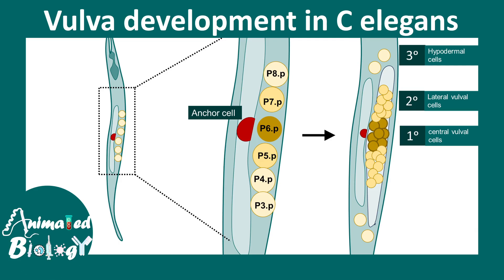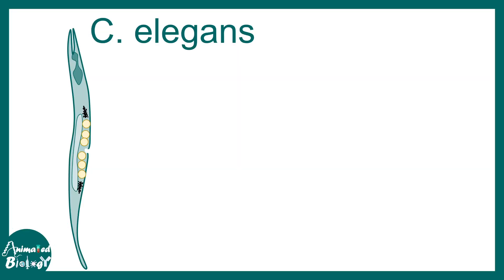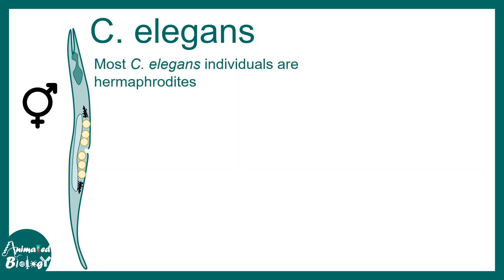In this video we'll be talking about the vulva development in C. elegans. C. elegans is a worm — it's a nematode and it's a wonderful model organism to study development and neuroscience.